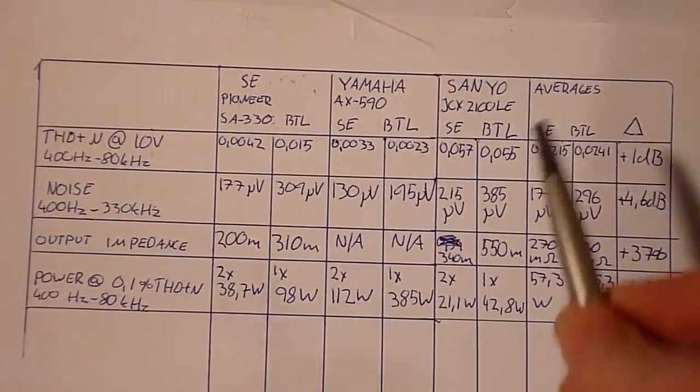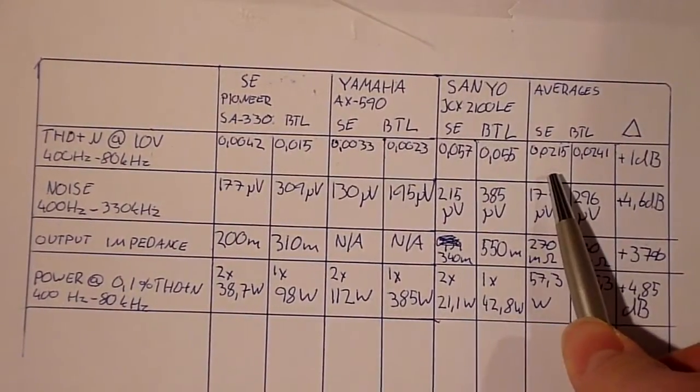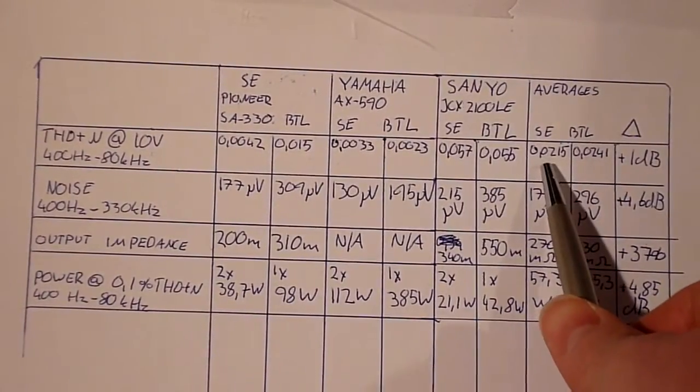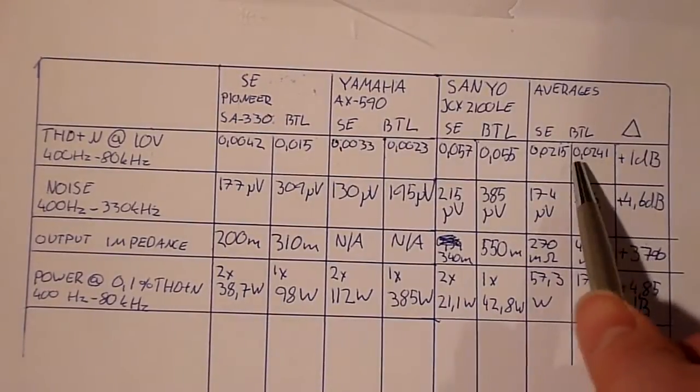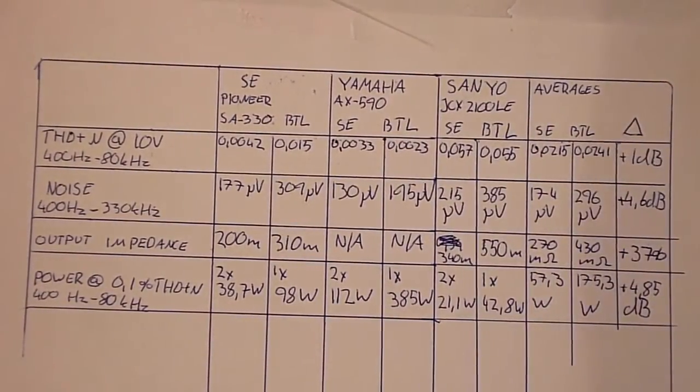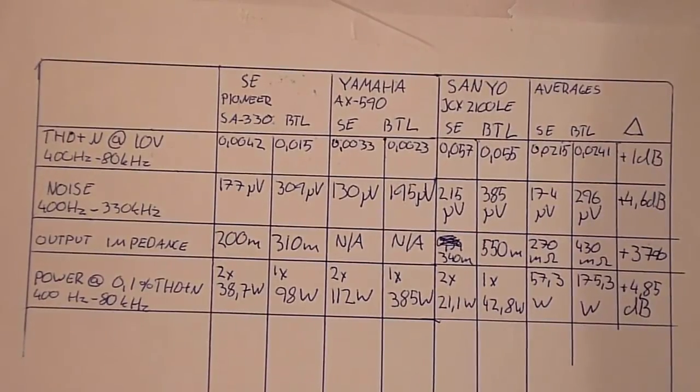I am baffled by this. I would have bet money that there would have been pretty much twice as much distortion in the bridge-tied unit, but apparently that's not the case, there is no difference.